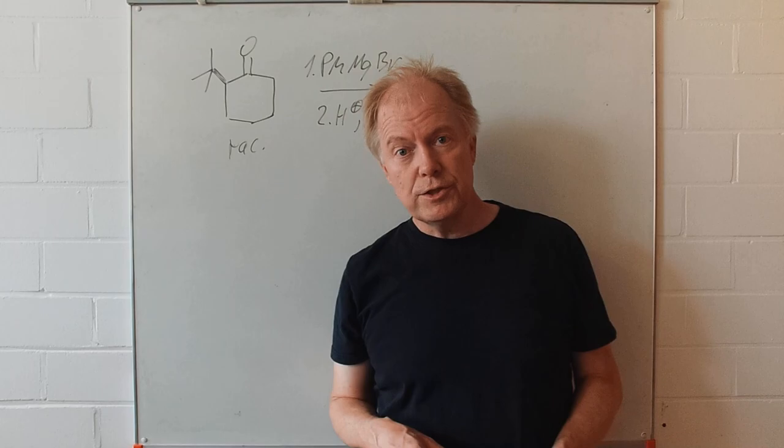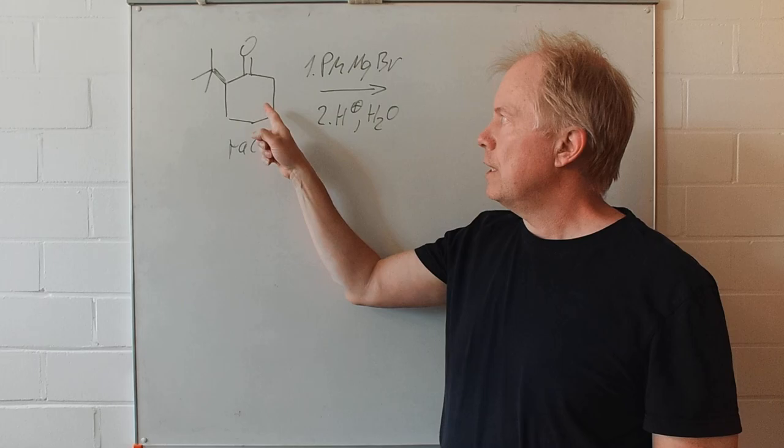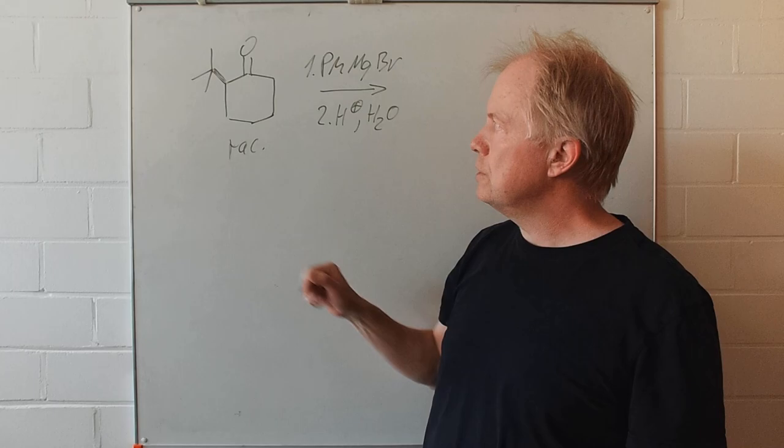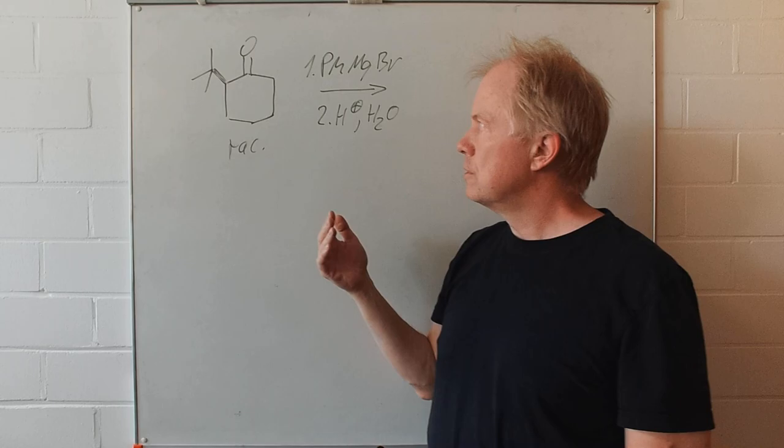In today's tutorial we will discuss the reaction of phenylmagnesium bromide, a Grignard reagent, with this ketone having a tertiary butyl group which is shielding one side of the ring. The phenylmagnesium bromide as the nucleophile will avoid contact with that bulky group and will attack from the other side of the ring.